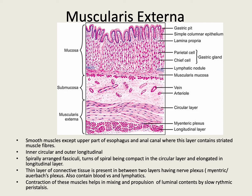The muscularis externa is the outermost muscle layer, and over the greater part of the gut it consists of smooth muscle. The exceptions are the upper part of the esophagus and the anal canal, where this layer contains striated muscle fibers. The muscle layer typically consists of an inner circular layer and an outer longitudinal layer of smooth muscle fibers. Both these layers actually consist of spirally arranged fasciculi, with the turns of the spiral being compact in the circular layer and elongated in the longitudinal layer.